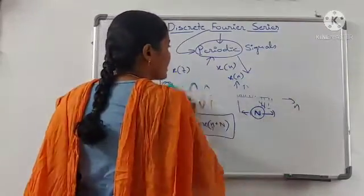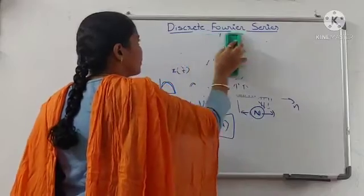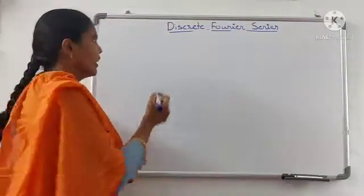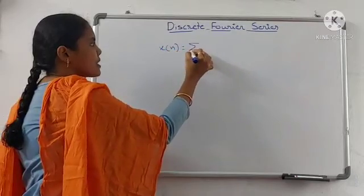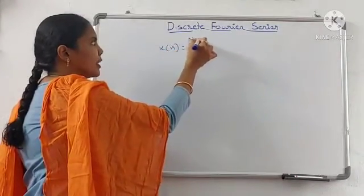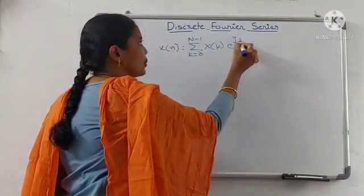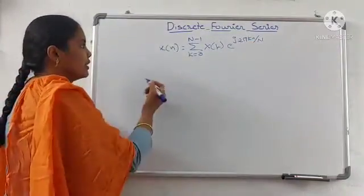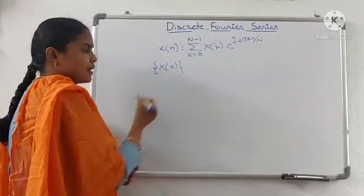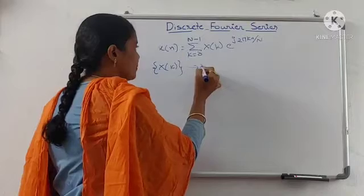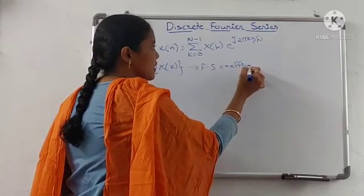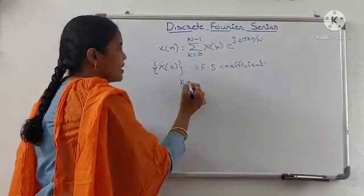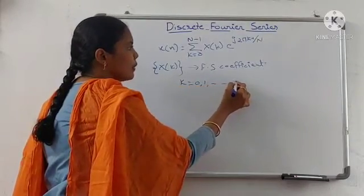Now we have to see how to represent the Fourier series signals. The discrete Fourier series can be represented as x of n equals summation from k equals 0 to N minus 1 of X of k, e to the power j 2 pi k n by N. In this, X of k is the Fourier series coefficient, where k is 0, 1, up to N minus 1.